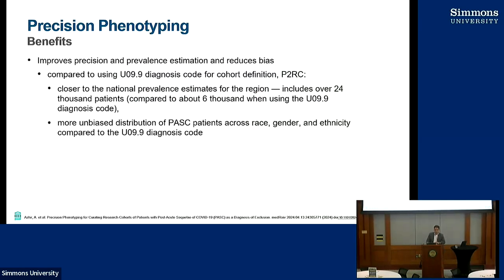First of all, it improves precision and prevalence estimation and reduces bias. In terms of long COVID phenotyping, there's not a lot of rules. There is a U09.9 diagnosis code that we compared our algorithm with. What we got in terms of prevalence is much closer to the estimated regional and national prevalence. If you use U09.9 diagnosis code, you get a much smaller number of patients than if you use this algorithm. The distribution of the patients is also much closer to the regional distribution. The U09.9 code is heavily biased towards certain populations — white, female — but our cohort is much closer to the distribution of population in the New England and Massachusetts region.